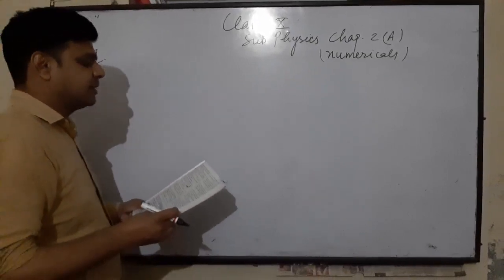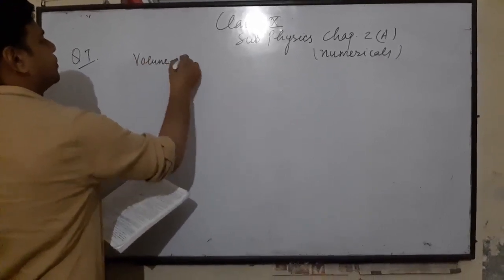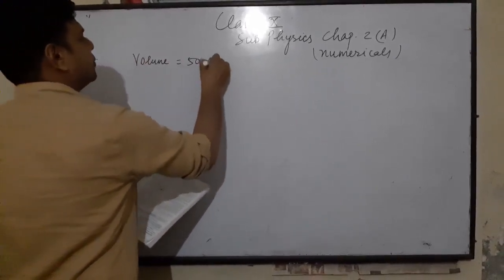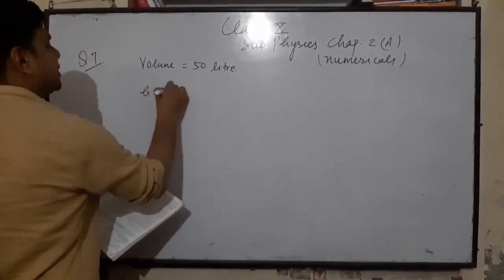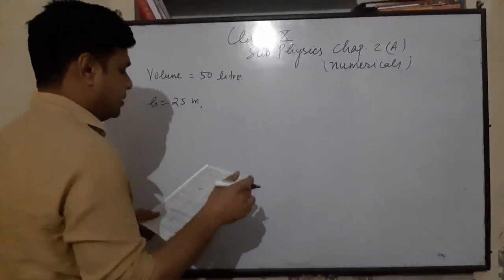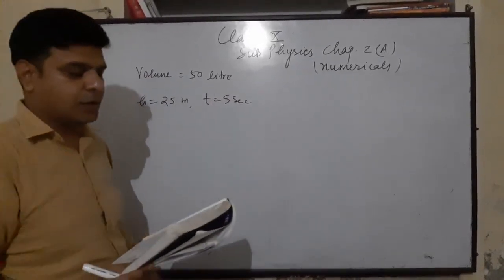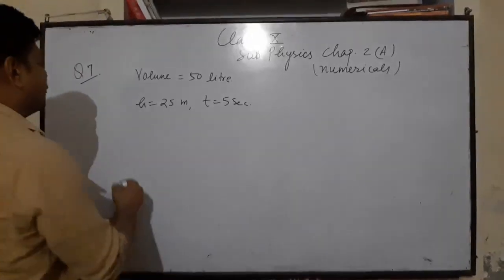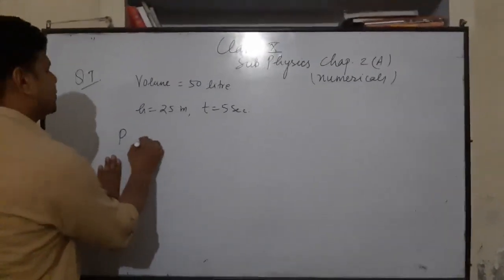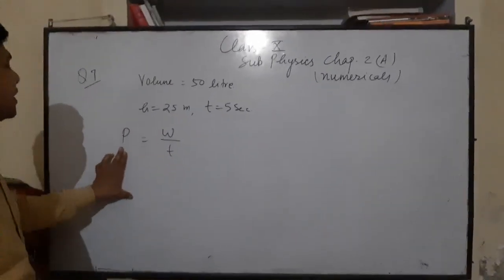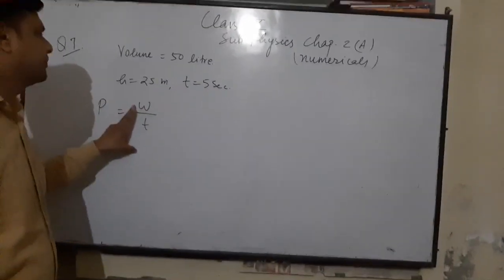Question number 7: A water pump raises 50 liters of water through a height of 25 meters in 5 seconds. Calculate the power of the pump required. Power is given by P = W/T.